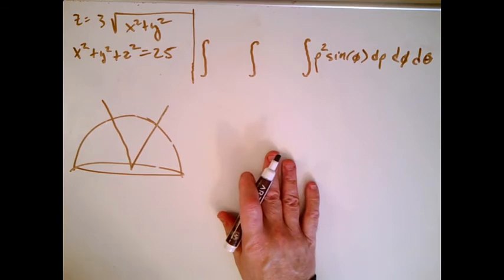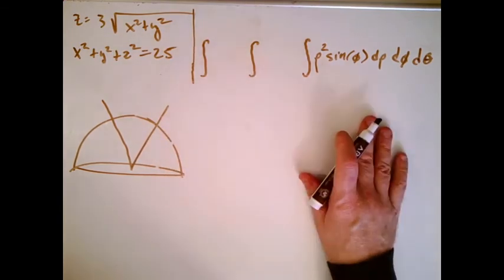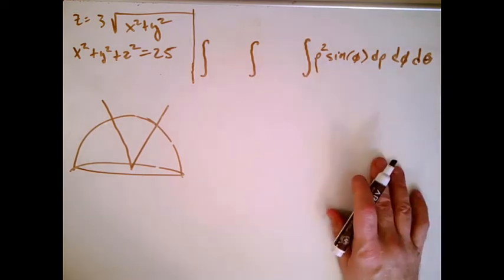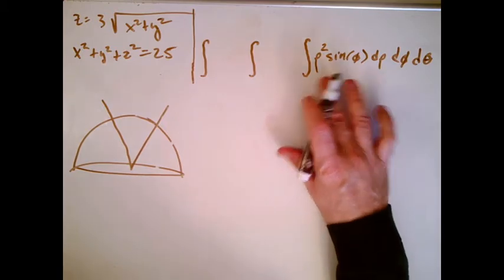Now the integral setup should always be the same. I should have integral, integral, integral. Remembering that this is volume, and this is actually the volume here of a little tiny spherical box, I always have to include the rho squared sine phi d rho d phi d theta.